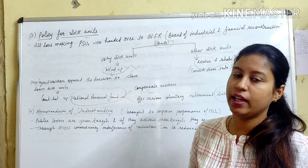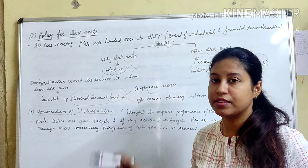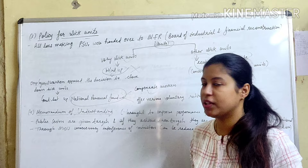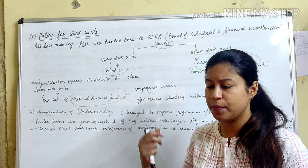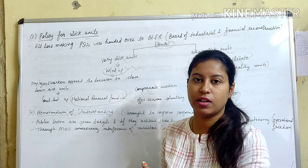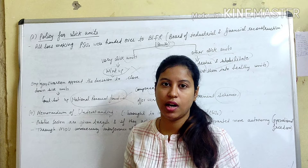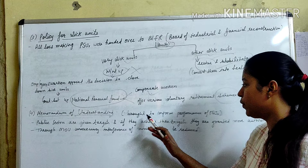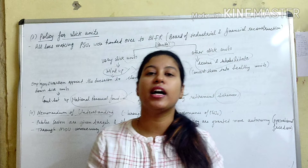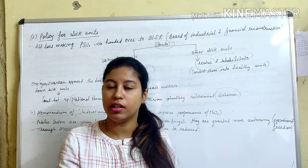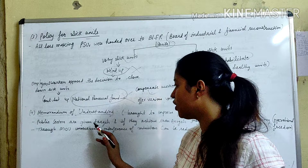The fourth and last government policy is the Memorandum of Understanding, or MOU. An MOU is a type of agreement between two parties. It was brought in to improve the performance of public sector units. Public sectors are given targets, and if they achieve these targets, they are granted more autonomy and operational freedom.